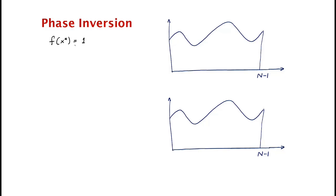At any given iteration of the algorithm — and the number of iterations is going to be square root of N — what the algorithm maintains is a superposition over all x. It maintains some superposition, sum over all x of alpha_x times |x⟩.